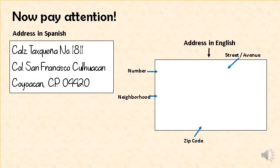When you write an address in Spanish, you write the name of the street or avenue first, and then the number. For example: Calzada Tasqueña, número 1811. Then the name of the neighborhood — Colonia San Francisco, Culhuacan. And finally, the zip code — Coyoacan, Código Postal, 04420.